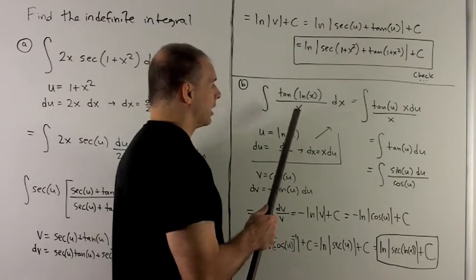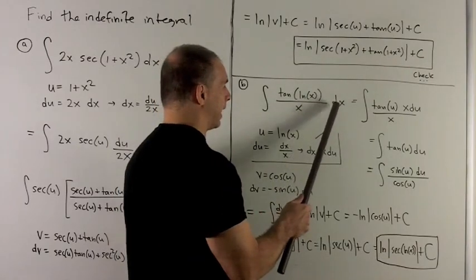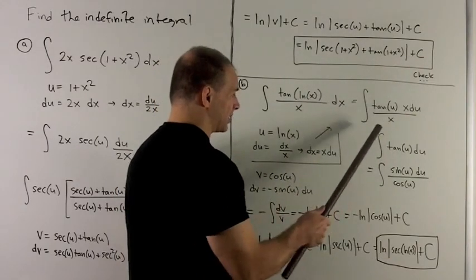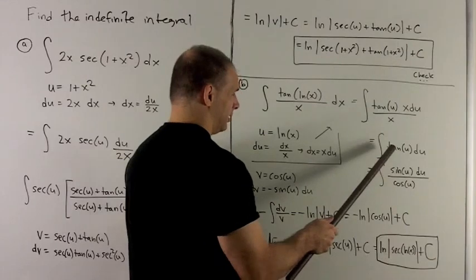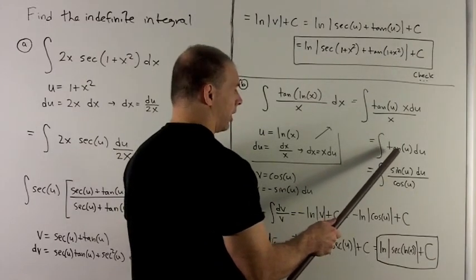I put in for u, I leave my x alone, and I put in my x du for dx. The x's cancel out, leaving me with integral of tan(u) du.